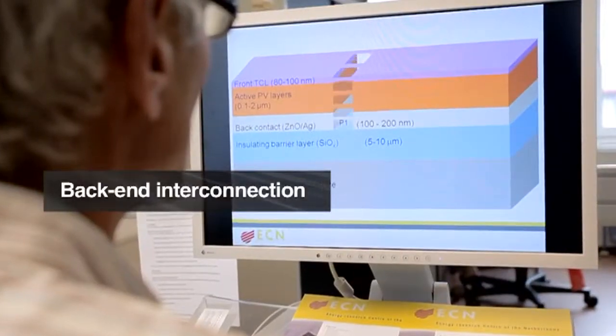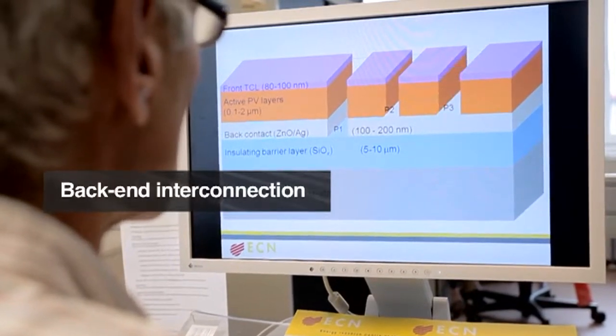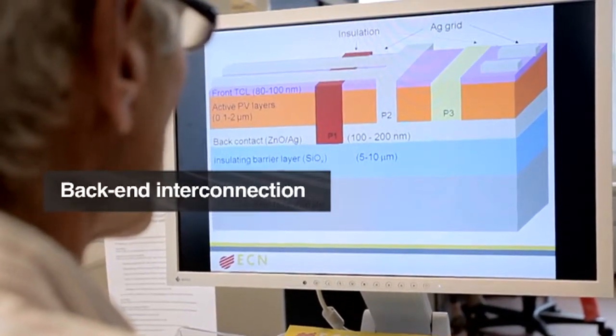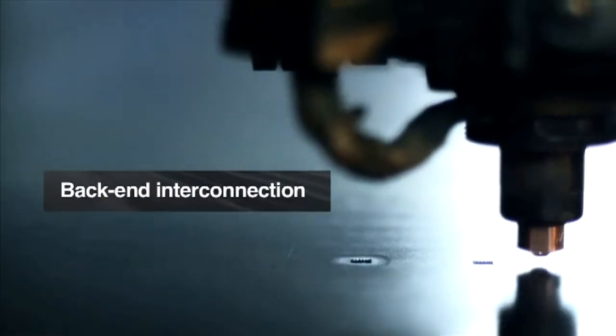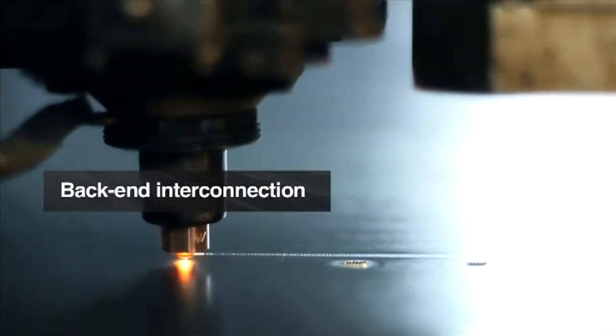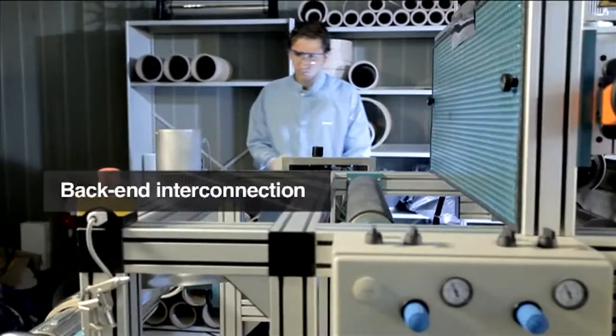ECN developed a back-end interconnection process for thin film PV. The combination of depth-selective laser scribing and subsequent printing enables faster and cheaper production.